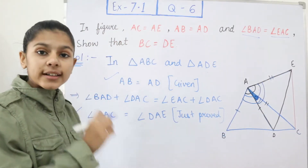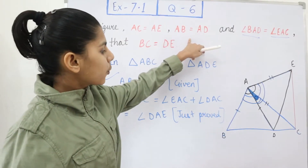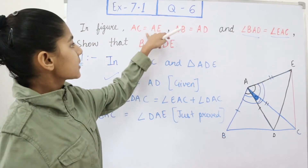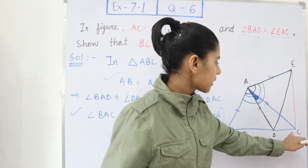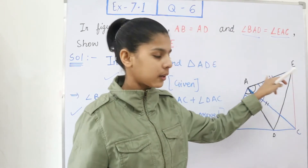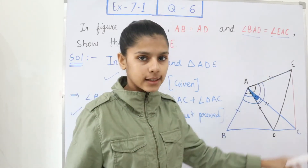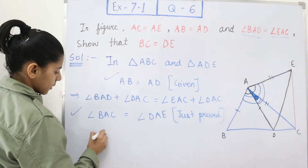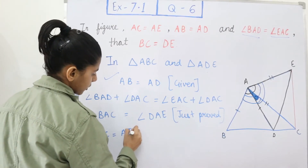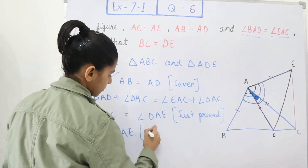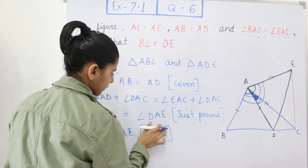Now we need one more condition. It is given that AC is equal to AE. AC is part of triangle ABC and AE is part of triangle ADE, so we write AC equals AE — reason: given.